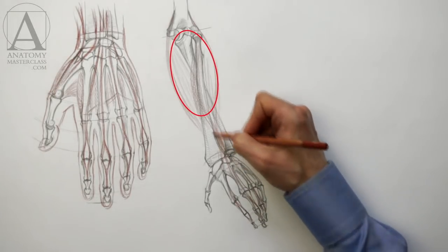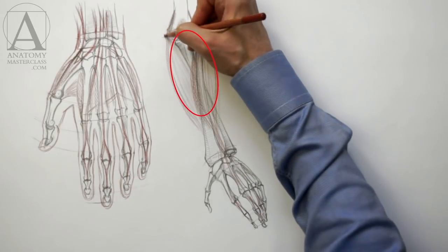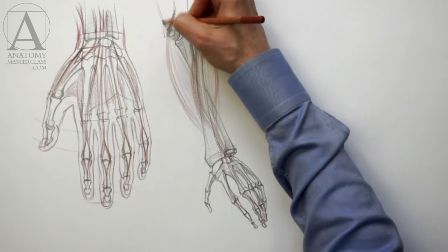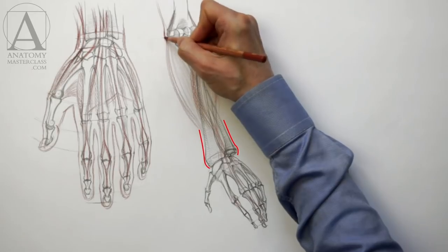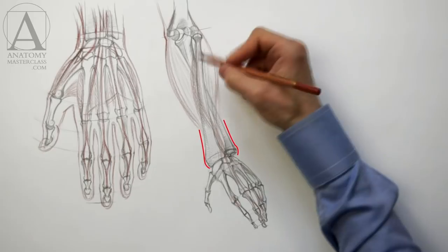You can see that the main mass of these two groups of muscles is located in the upper half of the lower arm. At the lower half of the forearm, these muscles become tendons. That is why the width of the arm near the wrist is defined by the width of two bones, the ulna and the radius.